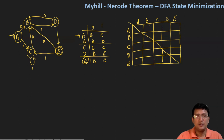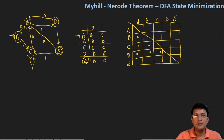I have drawn the state transition table for this, and I'm going to mark the states in which one of the states belongs to the final state and the other one does not. In this table, we will only consider the lower triangular values, not the upper triangle values. So the pairs are: BA, CA, CB, DA, DB, DC, EA, EB, EC, and ED. We have to mark these entries.